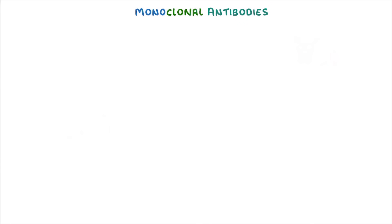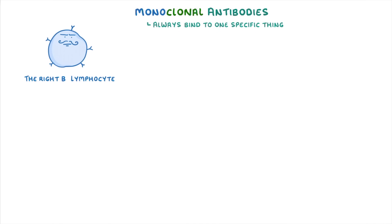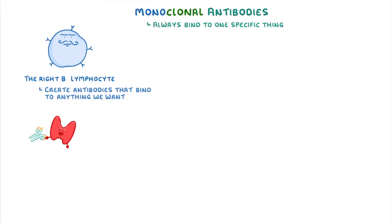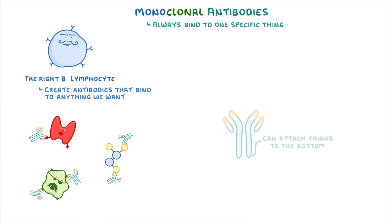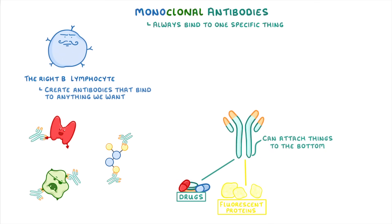The great thing about monoclonal antibodies is that they always bind to one specific thing. So by choosing the right B lymphocyte, we can effectively create antibodies that bind to anything we want. So we can make them to bind to a particular protein or cell within our body, or a harmful pathogen or chemical. We can also attach things to the bottom of antibodies, like drugs, fluorescent proteins, or radioactive material.